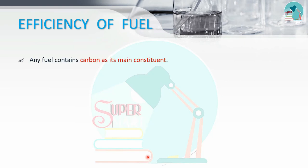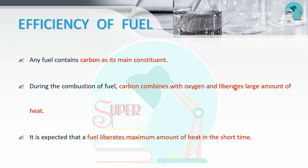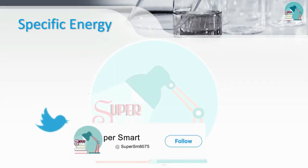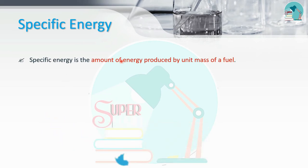All fuels contain carbon as the main constituent. When we use fuel, we must be careful about the impact on the environment. We should use the right amount of fuel to produce sufficient heat. This brings us to specific energy, which is defined as energy per unit mass of fuel, with units of joules per kilogram.